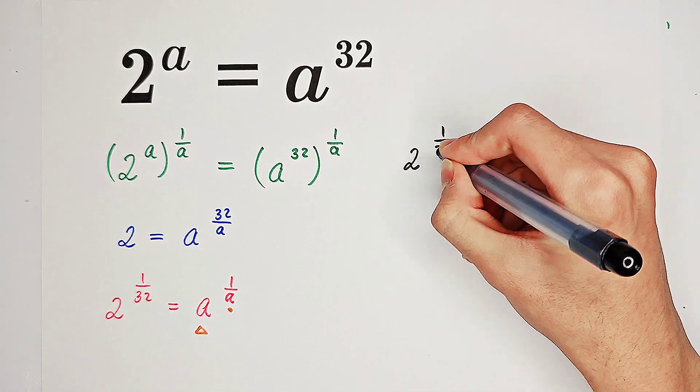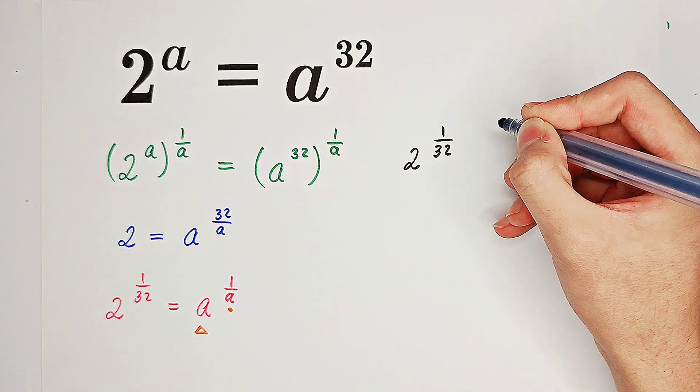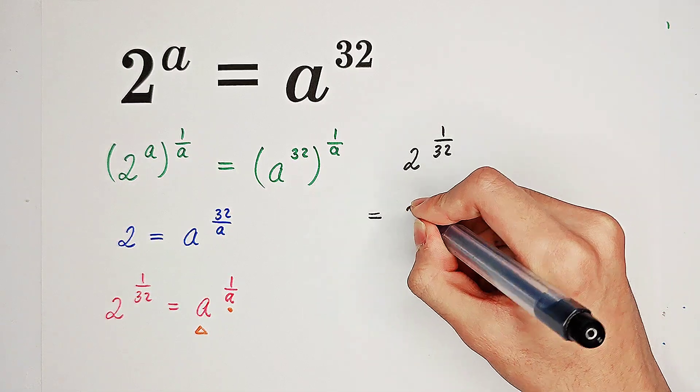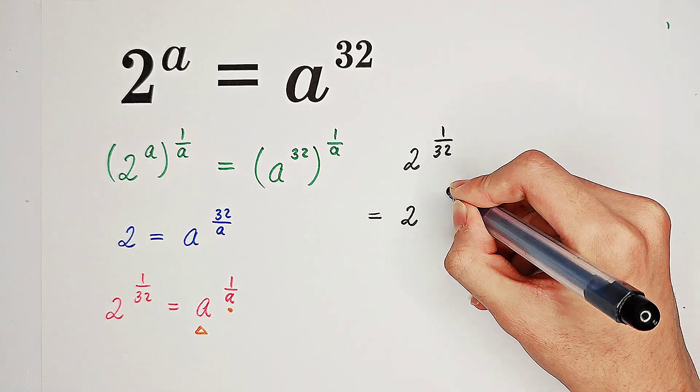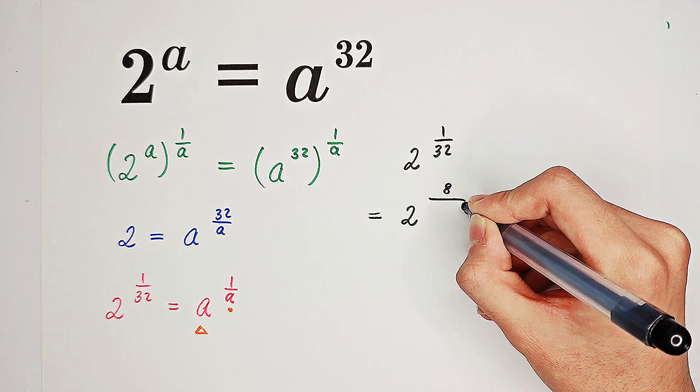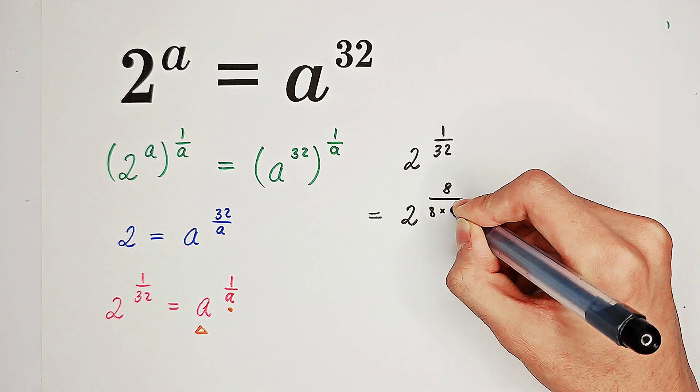2 to the power of 1 over 32. Now, what I'm going to do is multiply by 8 in the numerator and then divide by it. So that means we have 2 to the power of 8 over 8 times 32.